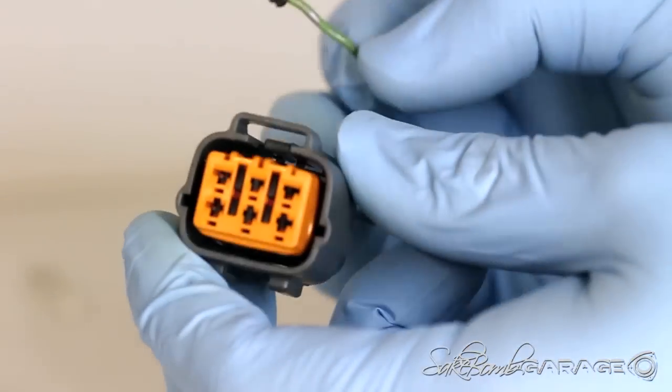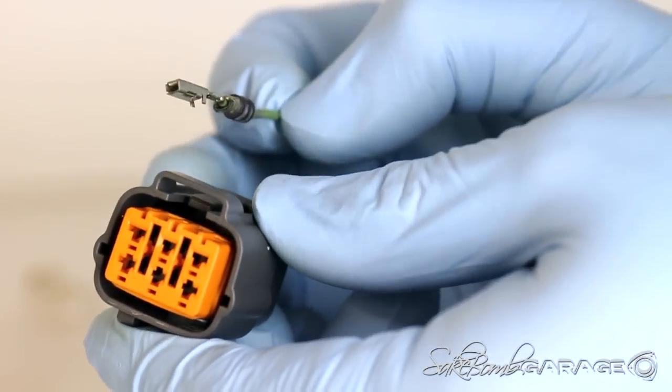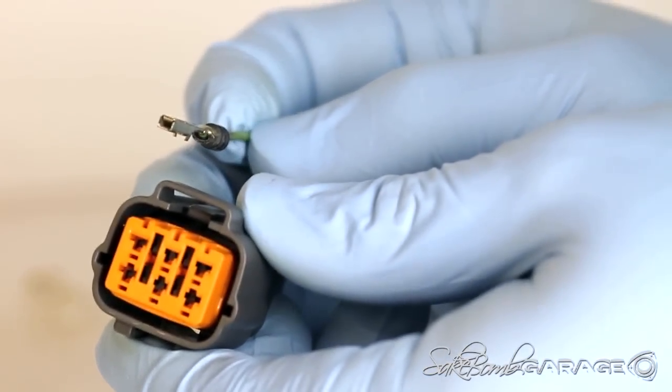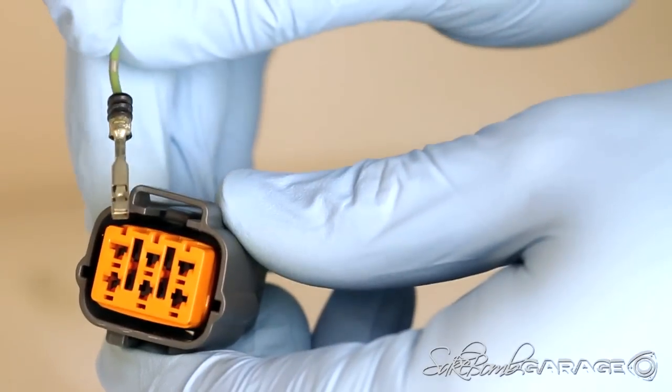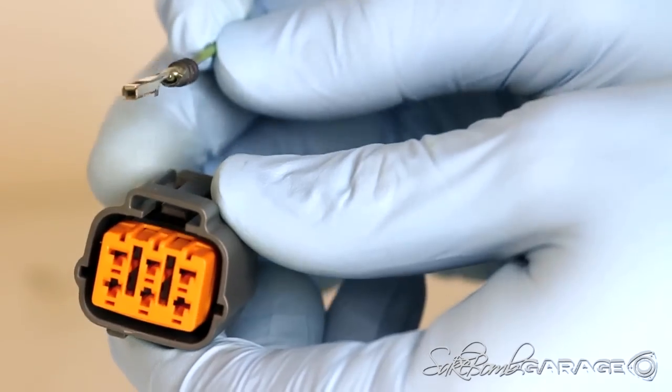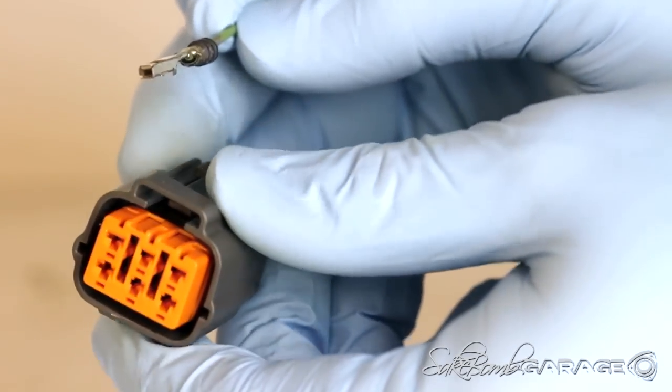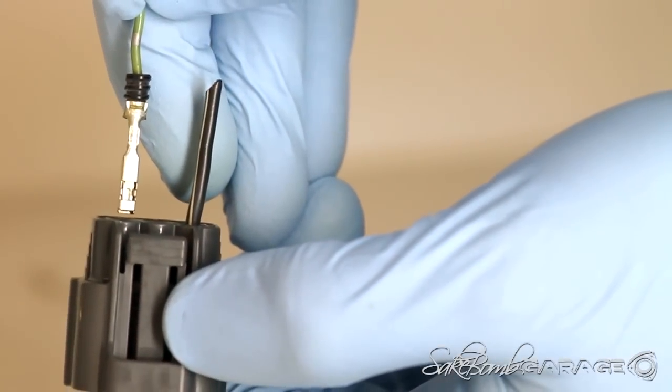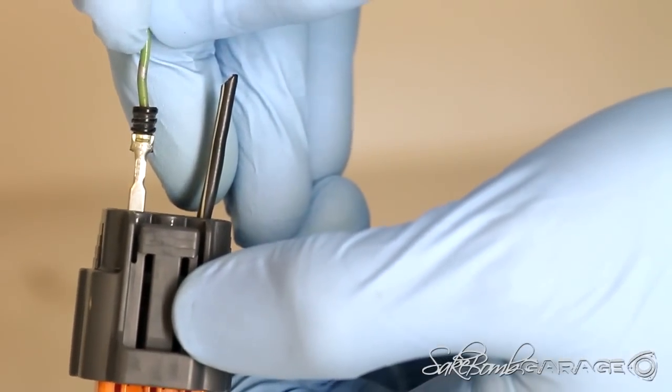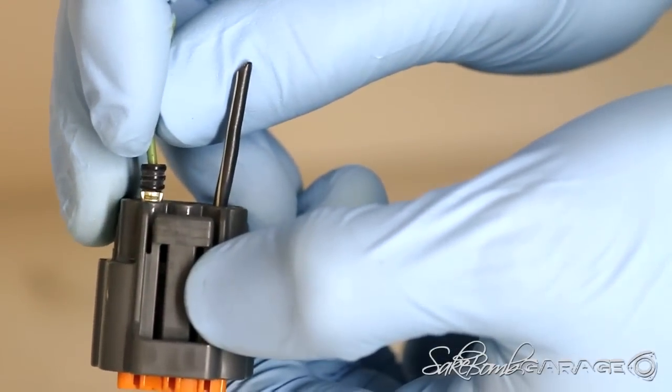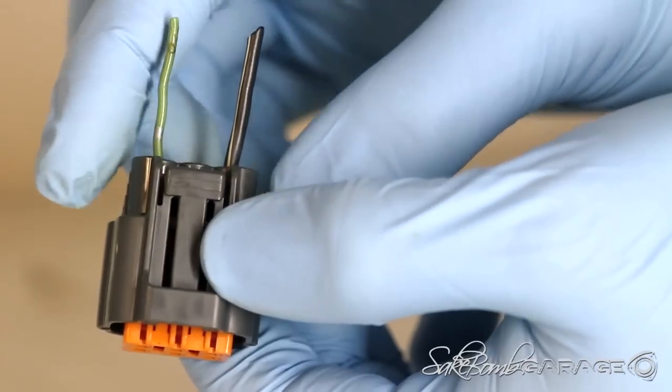That said, this will need to go into the Sumitomo connector into either position one or position four. Position one is here, position four is here. For this, I would recommend to put it in position one. Again, insert it to the back of the connector, as shown, until you hear the click confirming that it's been placed in the connector. Done.